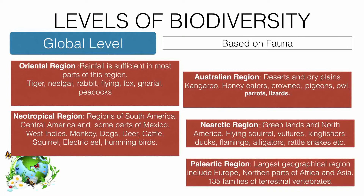In the Oriental region, animals such as tiger, nilgai, rabbit, flying fox, and peacock are common. The Neotropical region covers southern America, central America, and parts of Mexico.